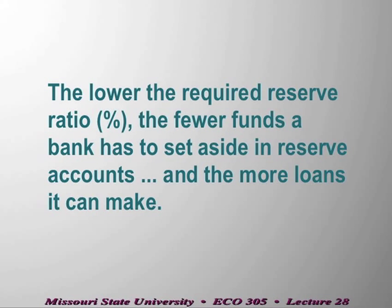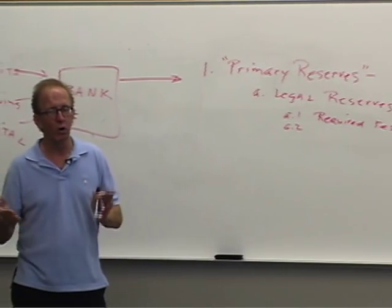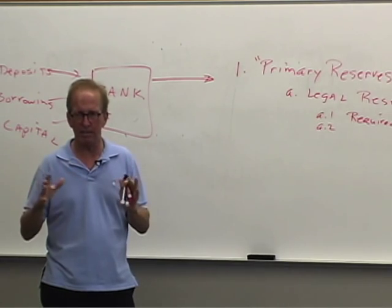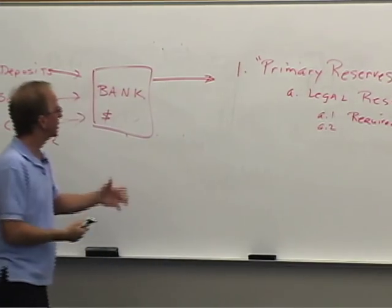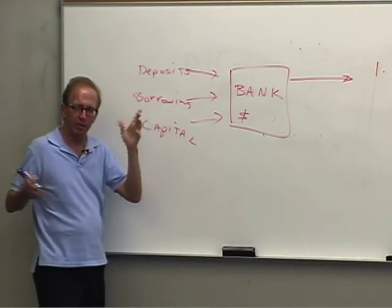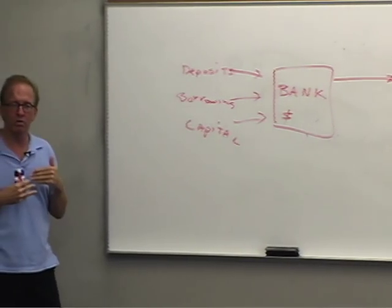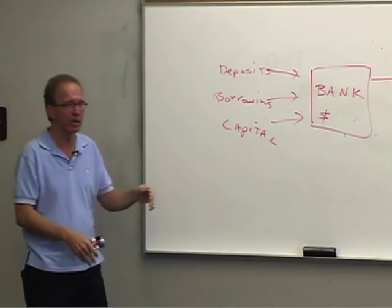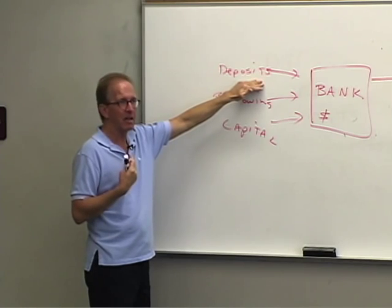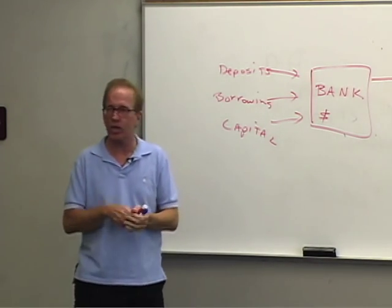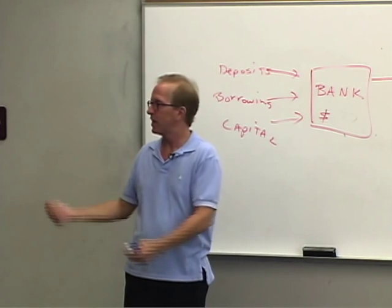Most of these reserves are not kept in the vault. Over time the banking system grows, meaning more deposits come in than are withdrawn. Since more deposits come in than go out on the average day, a banker could start with almost nothing in the vault and still be fine, because more people come in making deposits than withdrawals.